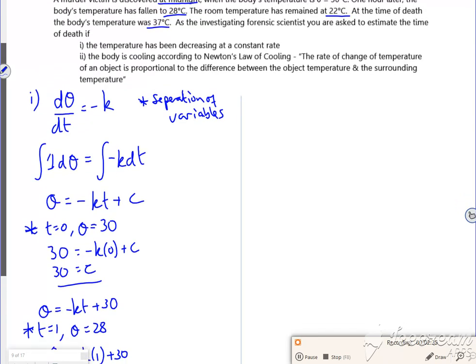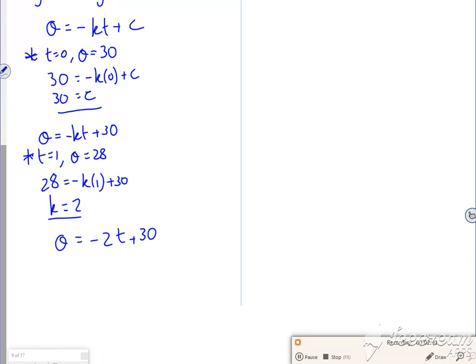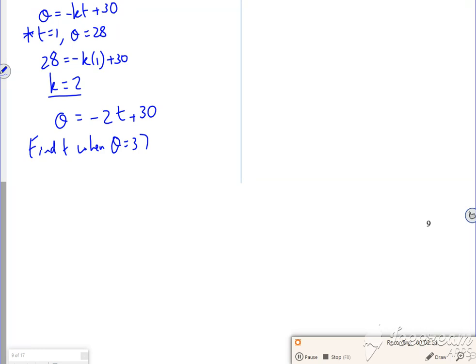So θ is minus 2t plus 30. And then it says estimate the time of death. So I want to find the time when θ is 37. So 37 is minus 2t plus 30. 2t is 3, t is 1.5.